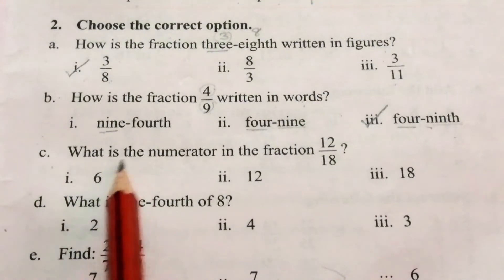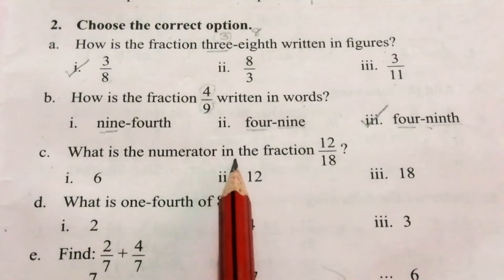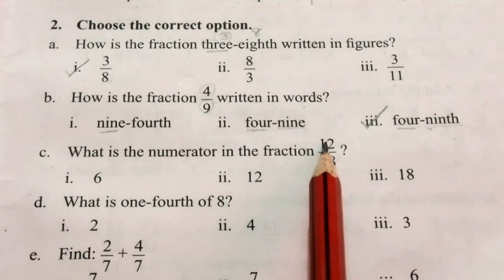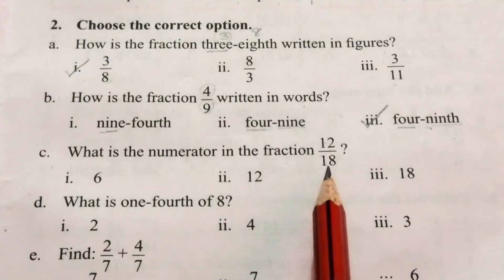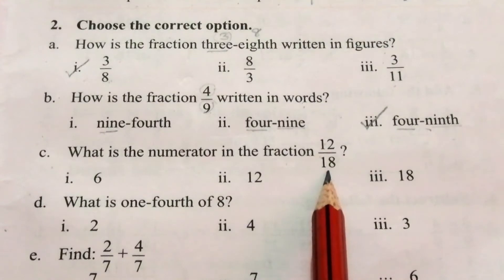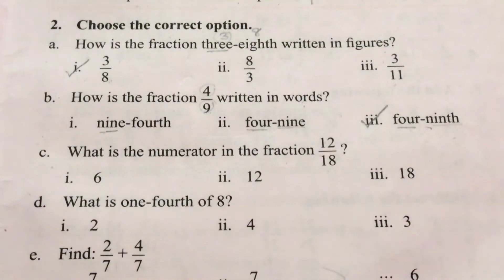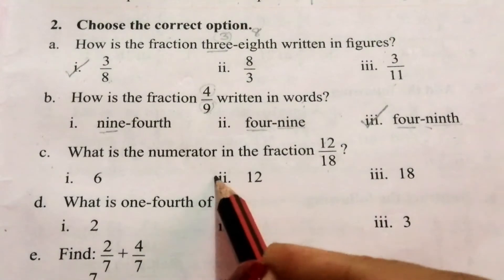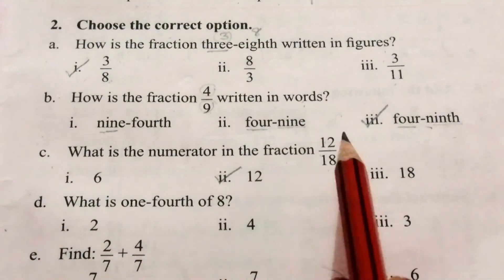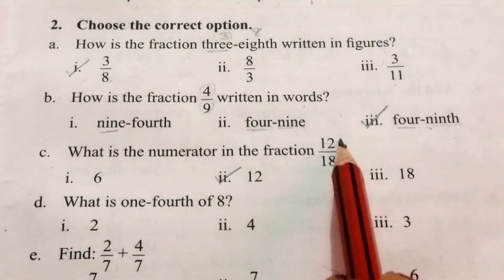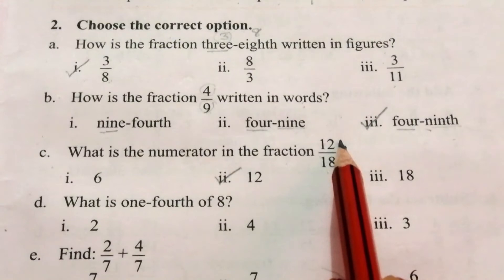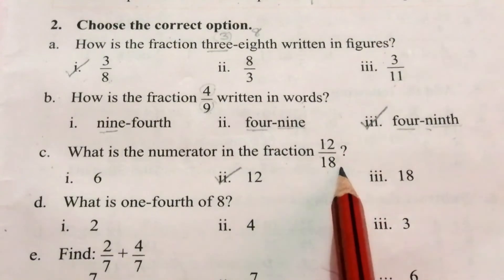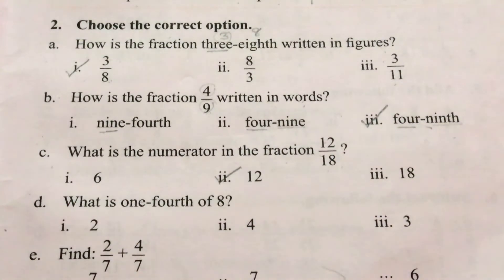Part C: What is the numerator in the fraction 12 by 18? The top number is the numerator and the bottom number is the denominator. So the answer is 12.